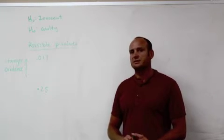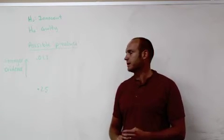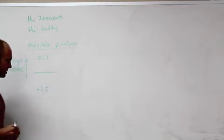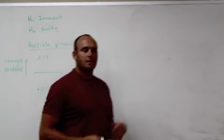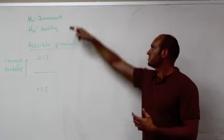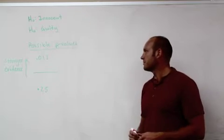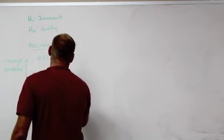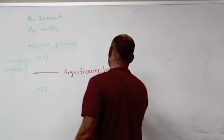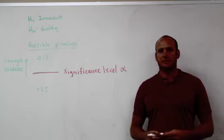So the question is: how do we know what is strong evidence and what is weak evidence — where is the cutoff? For that we have what is called a significance level. Before you start an experiment you need to know what level of strength is strong enough to change your opinion from innocent to guilty, or not change it at all. That cutoff number is what we call a significance level, and it is often labeled with an alpha.